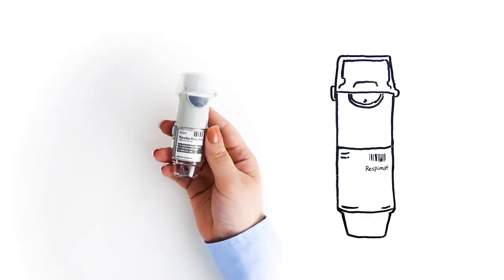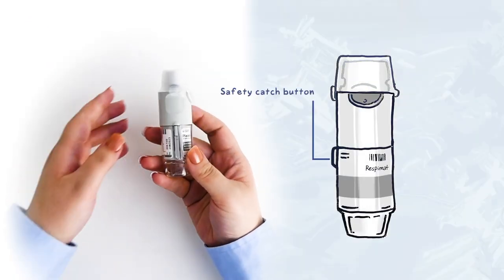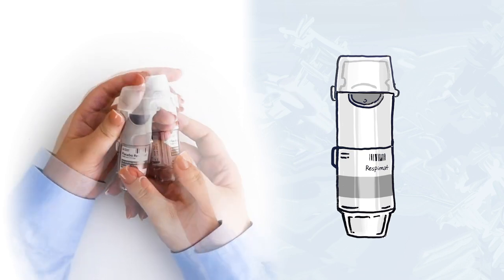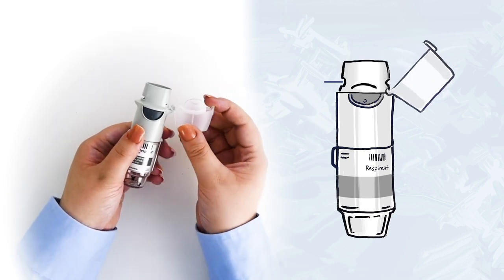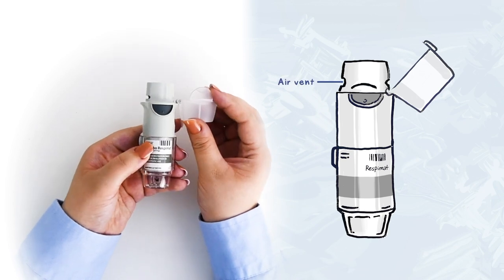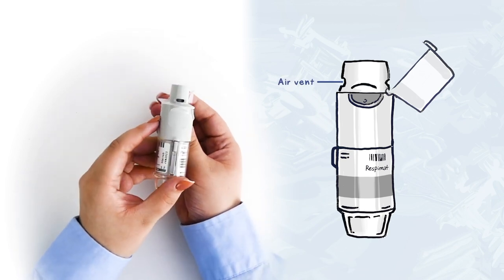The safety catch button along the side allows the clear base to separate from the top of the inhaler. Pushing up on the cap's opening tab reveals the mouthpiece. Along the sides of the mouthpiece are two air vents. Be sure not to cover these when using the inhaler.